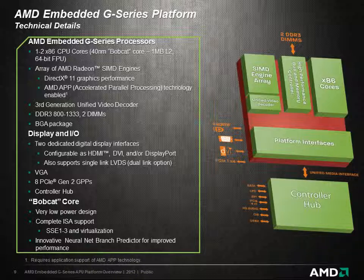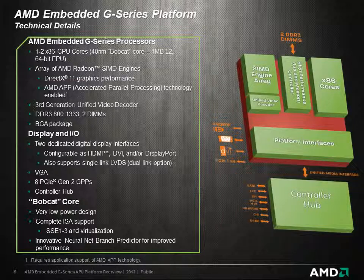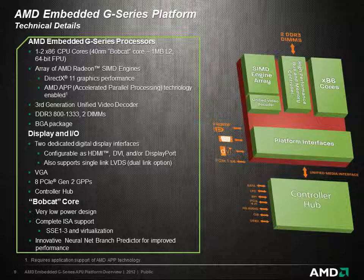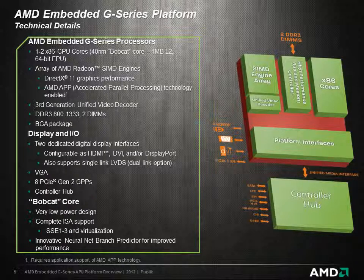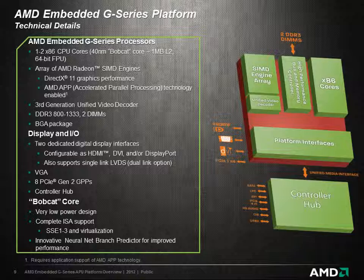The APU is connected by the Unified Media Interface to the AMD APU controller hub. The G-Series platform can support a total of 8 PCI Express Gen 2 general-purpose lanes in a variety of configurations and two independent displays, configurable as various combinations of HDMI, DisplayPort, DVI, VGA, or LVDS.